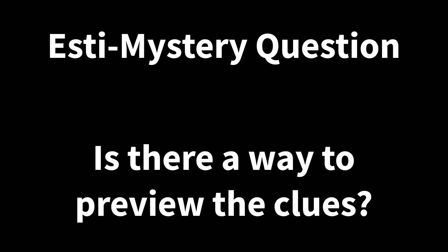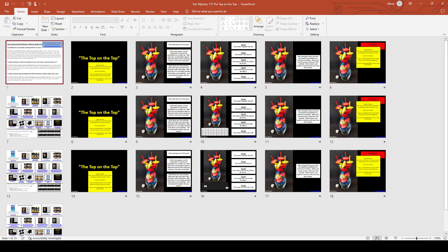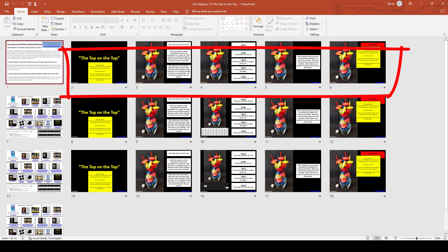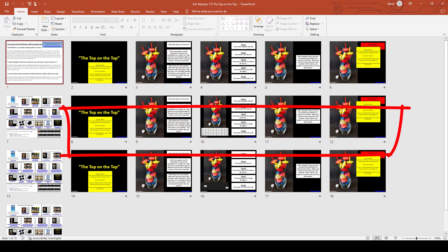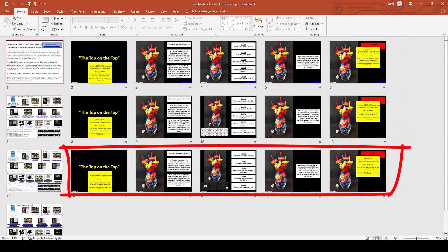Here's a recent Estimistry question: is there a way to preview the clues? The answer is yes, and it's really easy to do. When you open an Estimistry, you'll see that there are three versions: the version with no chart, the version with a static chart, and then the version with an animated chart.